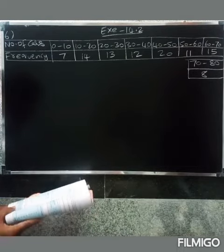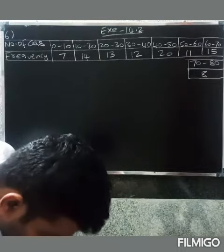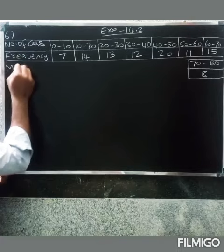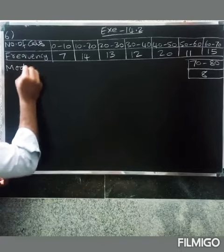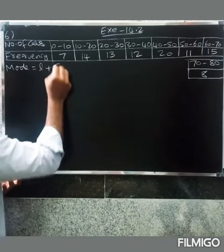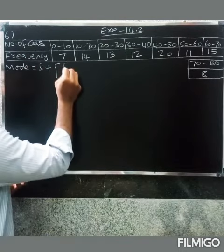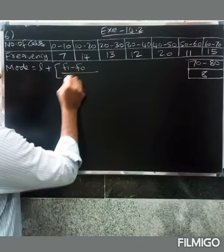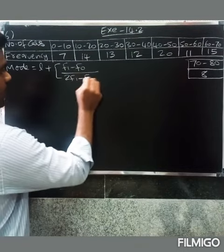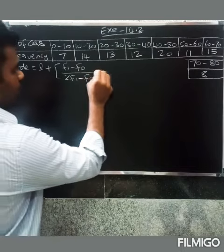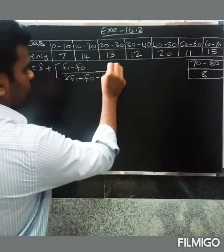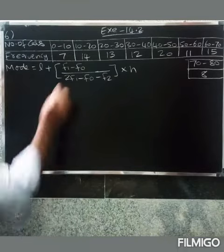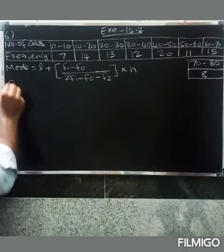So, mode equals the formula: L plus F1 minus F0, divided by 2F1 minus F0 minus F2, into H.